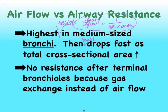Once we're past the terminal bronchioles and enter structures that participate in gas exchange, we have basically no resistance anymore. After the terminal bronchioles, we switch over to the respiratory bronchioles, which are the first structures where gas exchange will occur. This is a similar principle to blood vessels — once we reached the capillaries, they were leaky enough that we didn't see much resistance anymore.